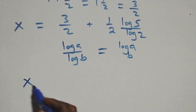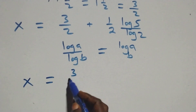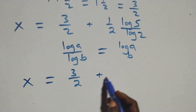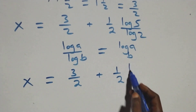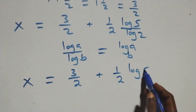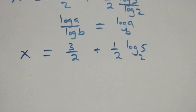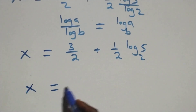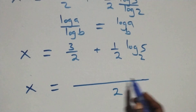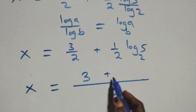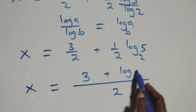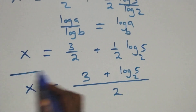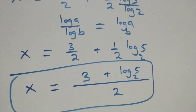We bring this together as one fraction with denominator 2, and we have x equals to (3 plus log₂5) over 2. So the value of x is (3 plus log₂5) all over 2.